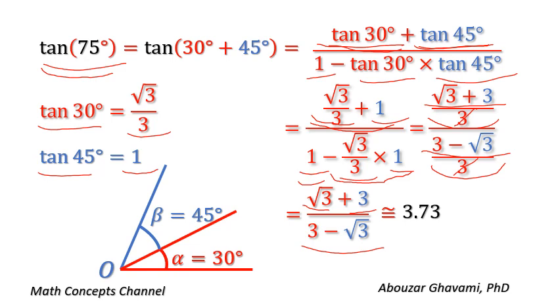That is approximately equal to 3.73. Therefore, tangent of 75 degrees is approximately equal to 3.73.